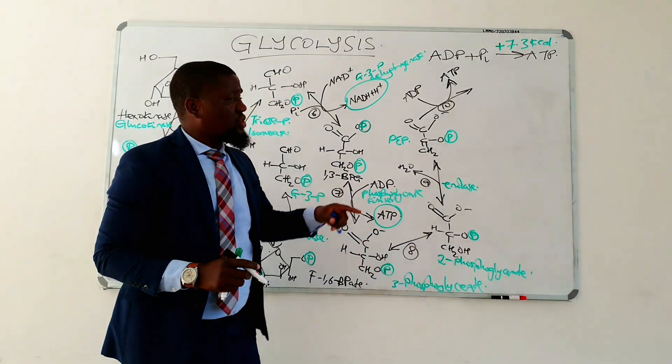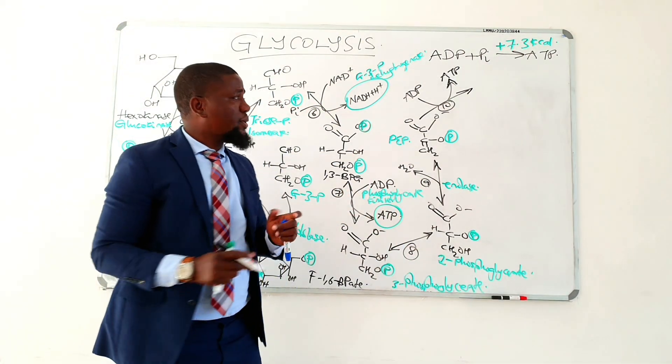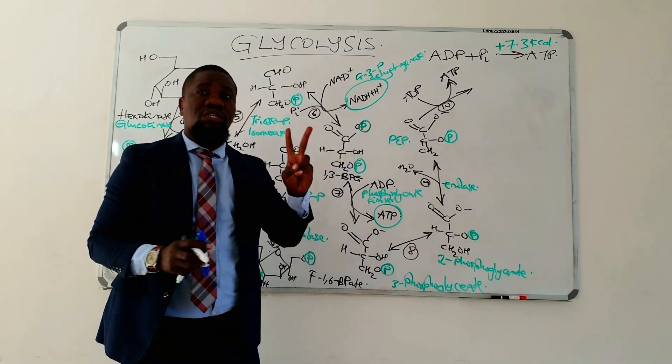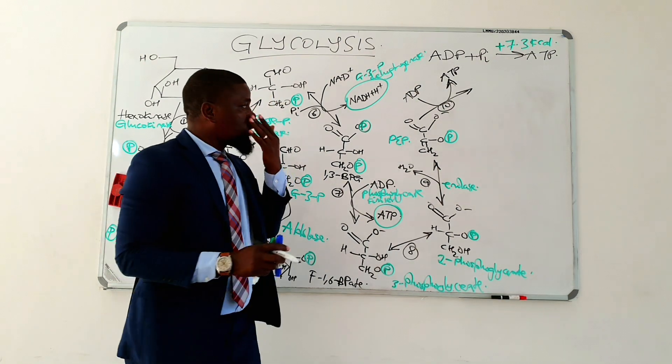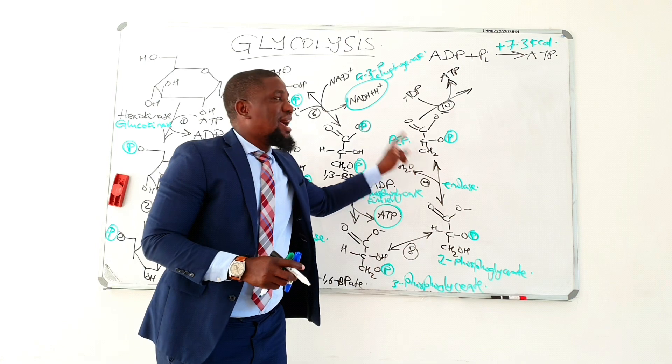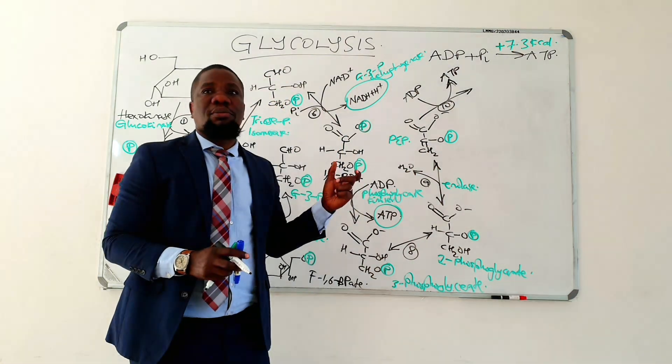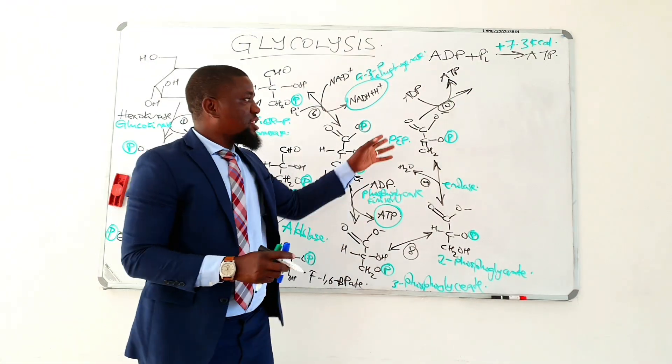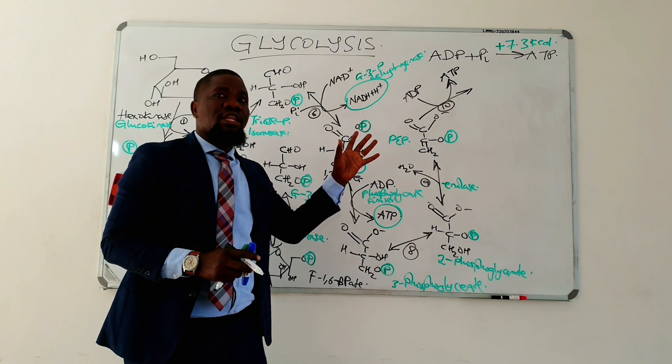Now, before I write the structure of pyruvate, I have to tell you that the pyruvate that is produced is going to come in two forms. It's going to come in an enol form, and then quickly it's going to isomerize into the keto form. This reaction went from an enol to a keto form.